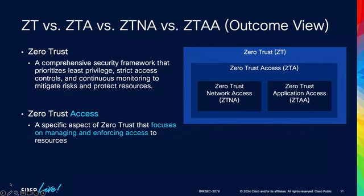So, how does zero trust, zero trust access, zero trust network access, and zero trust application access interrelate? This is a mental model I've adopted that has resonated well. Zero trust is a comprehensive security framework — concept of least privilege, continuous trust monitoring, trust but verify — with the whole goal of reducing risk. Zero trust access, as the name implies, is the application of zero trust principles to any type of access. Zero trust network access is the application of those principles to network access in some way, shape, or form.